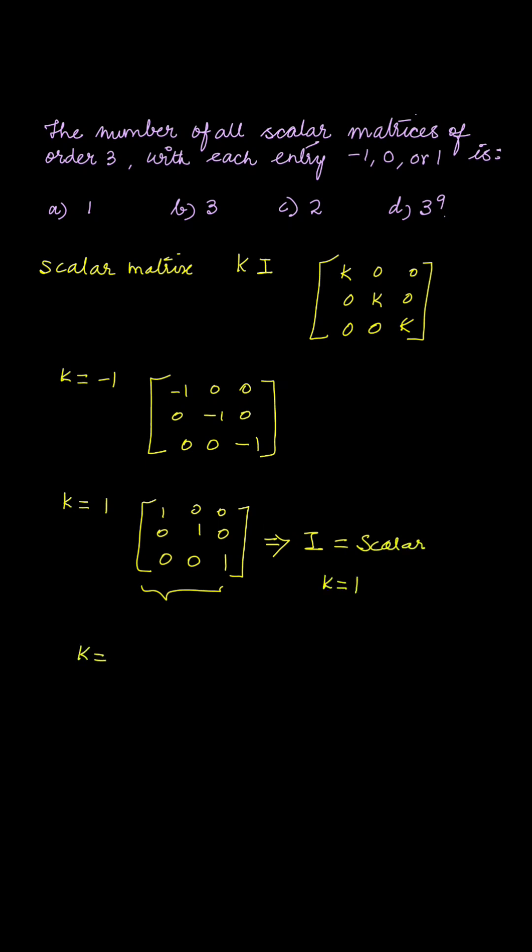If k is equal to 0, then all the elements become 0, which means it becomes a square null matrix, which is also considered as a scalar matrix because in this case, k is equal to 0.